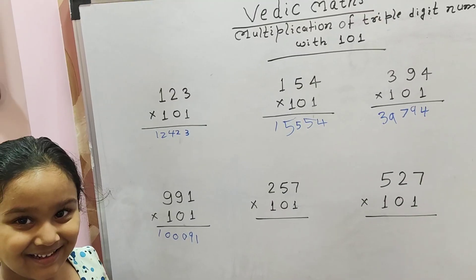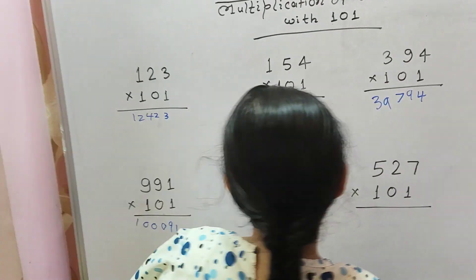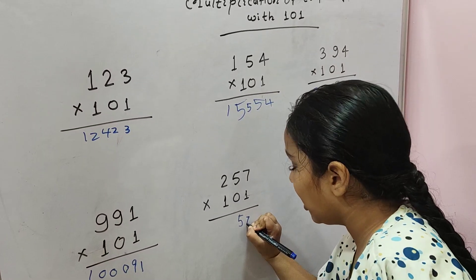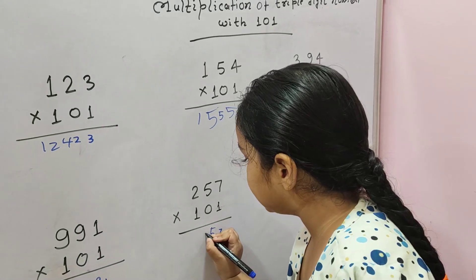So now let's do this one the same way. We'll add 57 here, and then 2 plus 7 is 9, and then we'll do 25. Answer is ready.